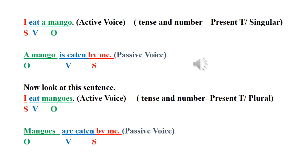Now look at this sentence. I eat mangoes. In this sentence, I, subject. Eat, verb. It is present tense. Mangoes, object. That is plural. Number, plural. In the earlier sentence, mango was singular. Now mangoes. Active voice. Tense and number, we have to think about. Eat, present tense. Mangoes, plural form.